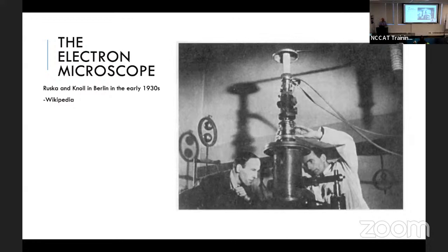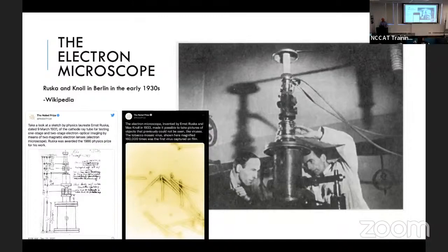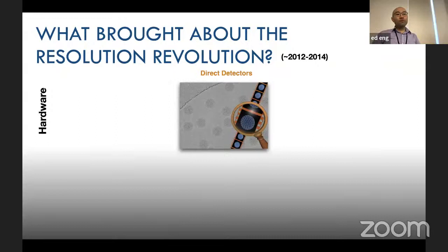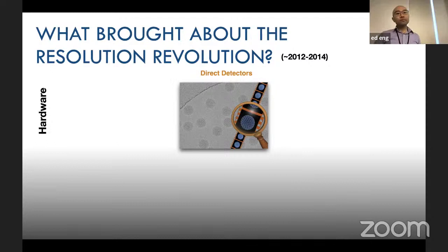When did we first get an electron microscope? In the 1930s there were ideas about it, and Ruska started building one. If you go to the Nobel Prize feeds, you can see there was a Nobel Prize for physics awarded for the electron microscope, and you can see some of the early designs and early images. A lot of structural biology techniques started around the middle of the 1900s. Why did it take so long for EM to catch up? There's a term people called the resolution revolution.